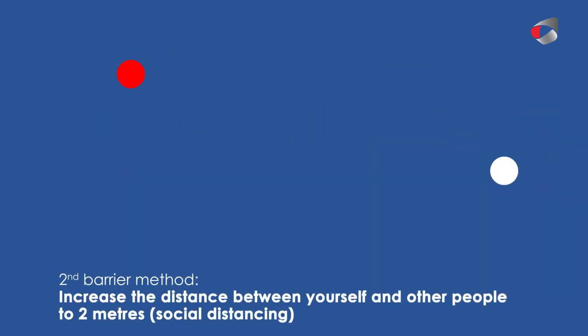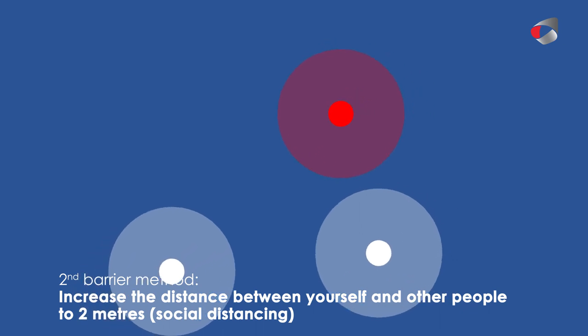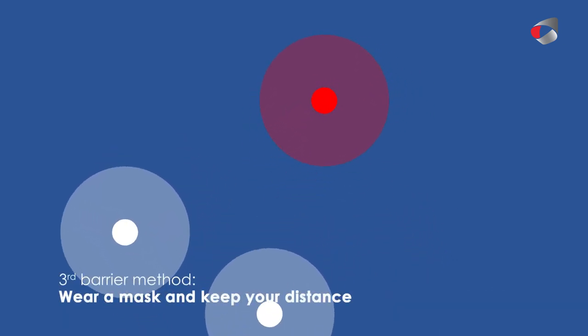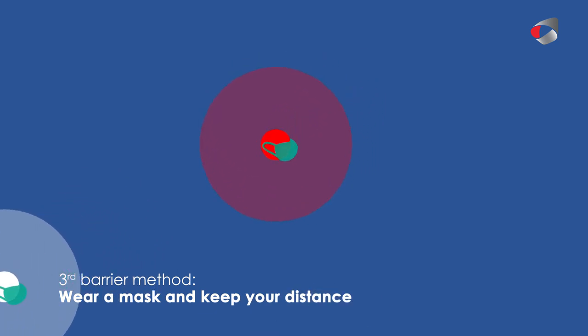Second, increase the distance between people you meet, and make sure you remain at least two metres apart, or the equivalent of two large steps. This will protect you from the droplets produced by sneezing and coughing, and it's known as social distancing.